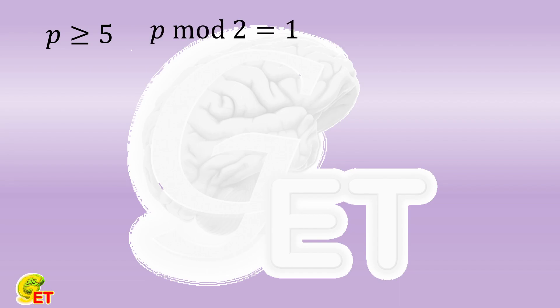And the remainder when divided by 3 can be either 1 or 2. What about the remainder once dividing it by 4? Is it 1, 2, or 3?